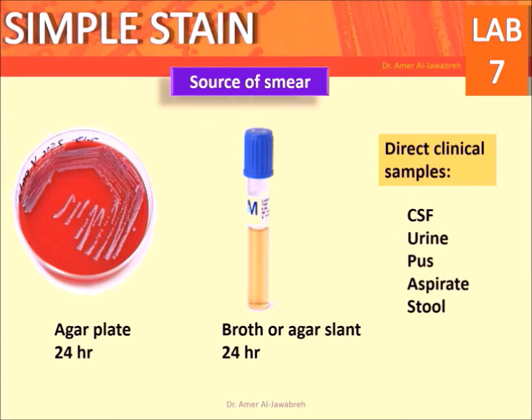Additional organism examples include: Sarcina ventriculi, Pseudomonas aeruginosa, Propionibacterium acnes, Clostridium botulinum, Salmonella typhi, Vibrio cholerae, and Helicobacter pylori, Treponema pallidum. Source of smear: agar plate, blood, clinical samples such as CSF.